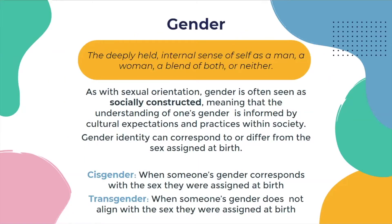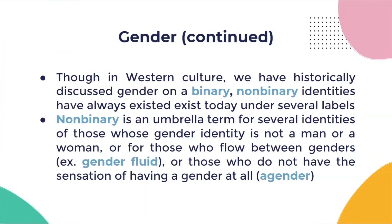Gender is a deeply held internal sense of self as a man, a woman, a blend of both, or neither. Gender is socially constructed, like sexual orientation is, so your culture affects the way that you experience your gender. It can correspond to or differ from the sex assigned at birth. For example, I was assigned female at birth and I currently identify as a woman, so I would be cisgender. But if the gender I experience does not align with that, I would be considered transgender.